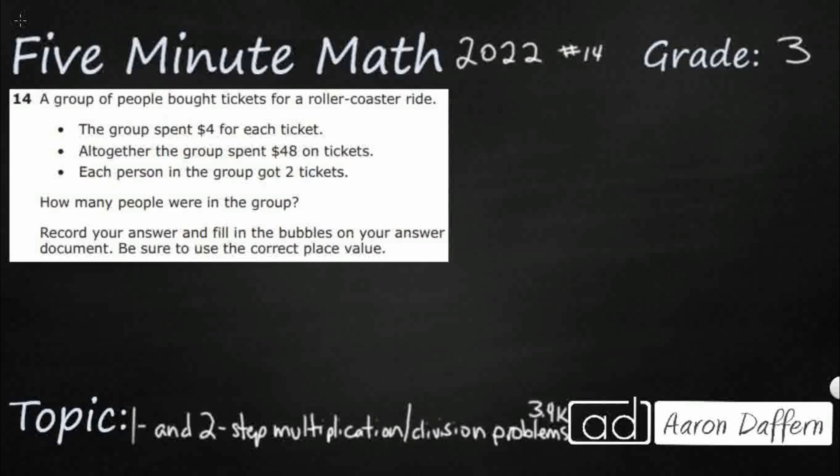So we have a group of people. They're buying tickets for a roller coaster. Alright, so we've got $4 for each ticket. Altogether the group spent $48 on tickets, but then each person had to get two tickets. Okay, so that's kind of confusing. How many people were in the group?